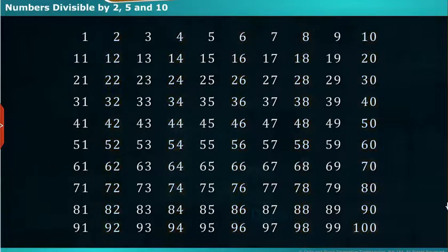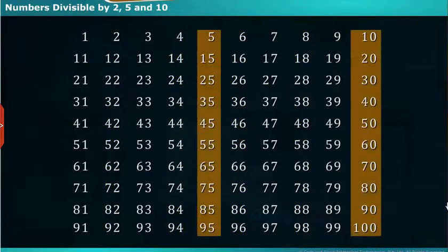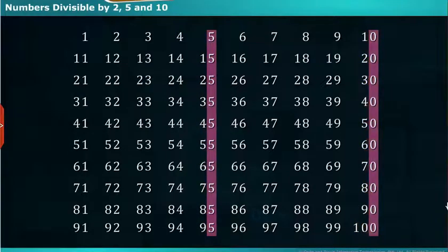Let's identify the numbers which are divisible by 5, leaving the remainder as 0. If we observe the numbers carefully, the digits in the ones place are 5 and 0. Hence, all the numbers which are divisible by 5 are called multiples of 5.